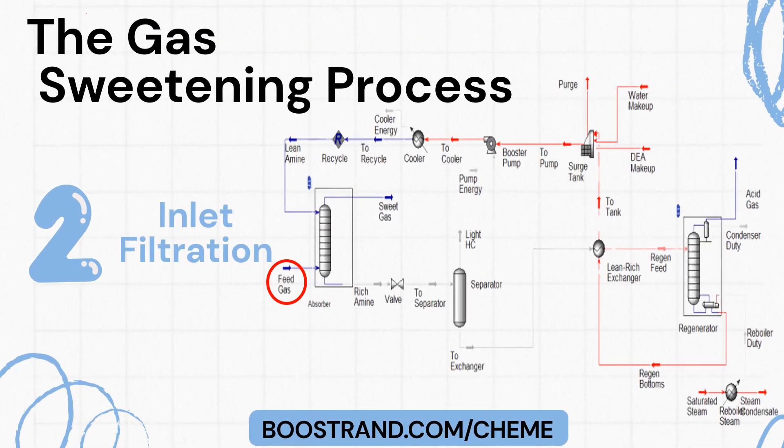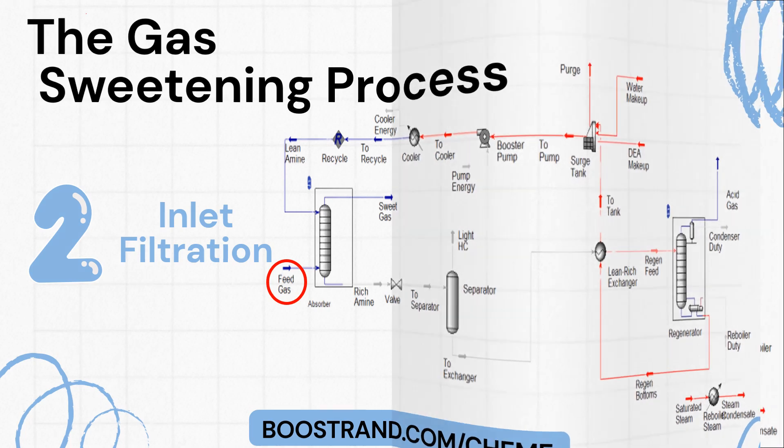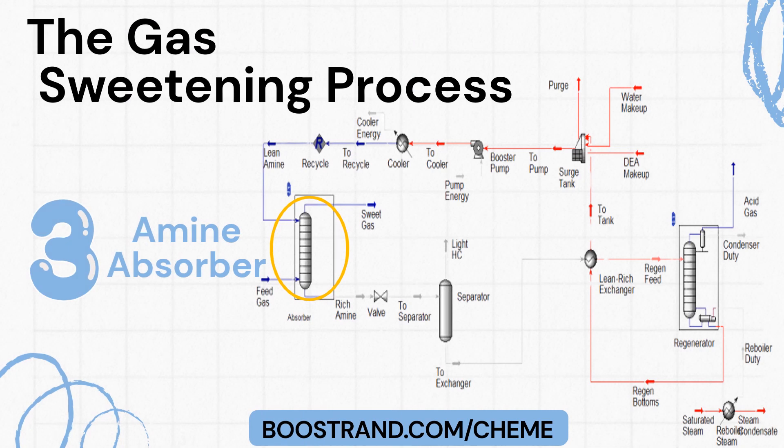Feed gas is filtered to remove particulates and liquid droplets that could harm the amine solution or downstream equipment. Sour gas then contacts the amine solution in the absorber, where the amine absorbs H2S and CO2, forming rich amine, and allowing sweet gas to exit the top. This sweet gas is our main product.